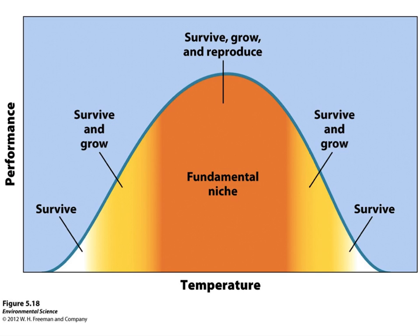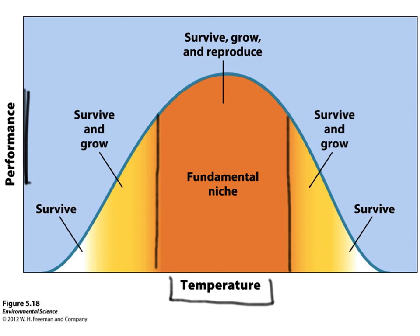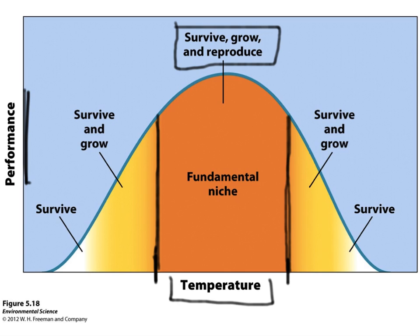This graph right here is showing fundamental niche — the ideal abiotic conditions that a species may live in — and it's just addressing temperature. The y-axis is performance. There's high performance within a particular temperature range. Between these two temperatures, a species survives, grows, and reproduces. It not only survives, but it also has great growth and is able to reproduce, so it's high performance within this temperature range.